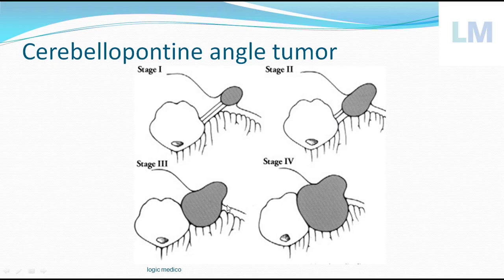In Stage 3, the tumor is touching the CP angle — the cerebellopontine angle — and even the sixth cranial nerve can be involved; inferiorly the ninth and eleventh cranial nerves may also be affected. In Stage 4, there is massive enlargement resulting in midline deviation. The tumor size is more than 15 millimeters. It is compressing the brainstem and cerebellum, causing intense headache and cerebellar compression leading to problems with gait — a drunken gait because of cerebellar compression.